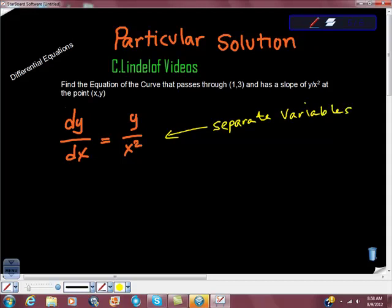If you have any questions about how I did this, I'll be glad to show you sometime. I'm just going to multiply by dx, the whole thing by dx, and then I'm going to multiply the whole thing by 1 over y. I'm going to get dy over y is equal to dx over x².